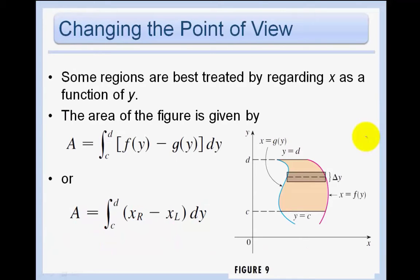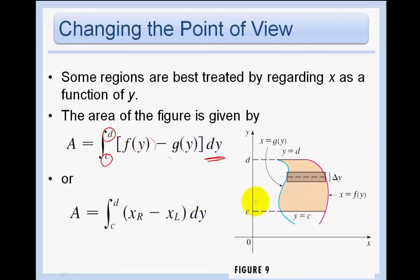Now we change our point of view. In all the first examples, we used vertical strips. But there will be instances where it's easier to use horizontal strips. With horizontal strips, we add up rectangles between y equals c and y equals d. Since c and d are y-bounds, we integrate with respect to y. And instead of top minus bottom, we do right minus left to get a positive height.